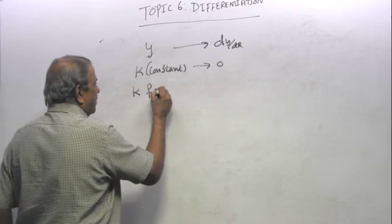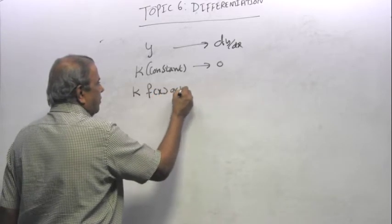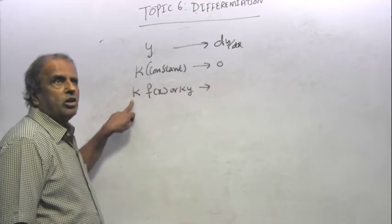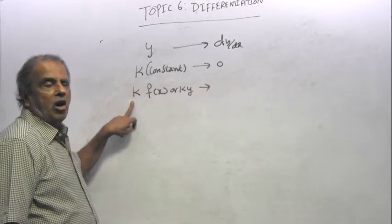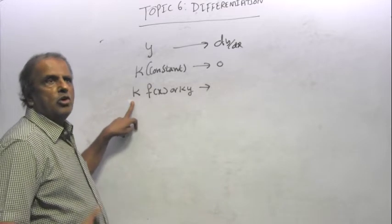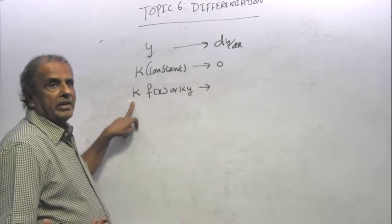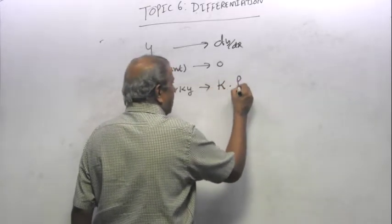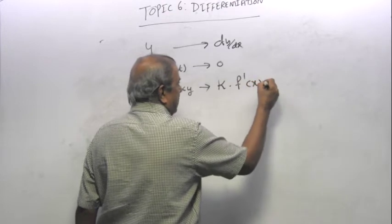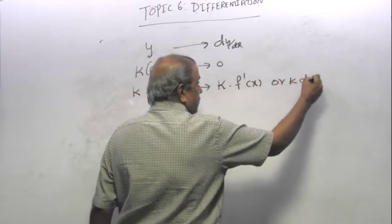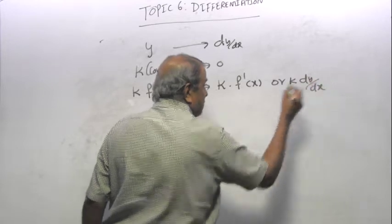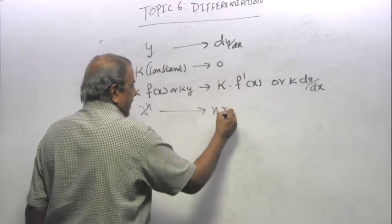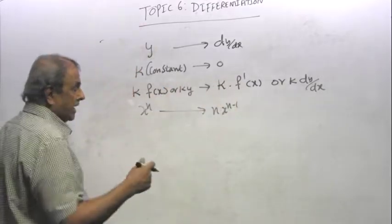But suppose you have KF of X or KY. Meaning you have like 2X squared or 2 times X plus 1 or 2X plus 3. You have 2 times X plus 3. A constant and a function of X, then the constant remains there only and you find that derivative. Of course I will take lots of examples to show this. Then X power N is N X power N minus 1. Do not need to copy this, it is in the handout.